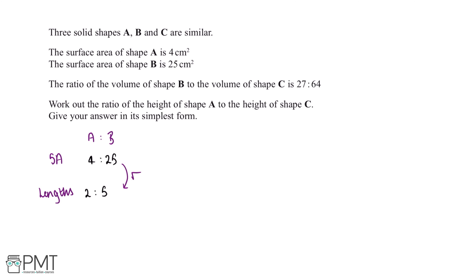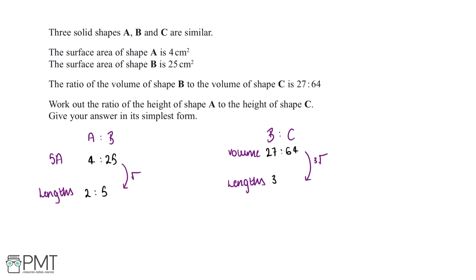The square root of 4 is 2 and the square root of 25 is 5. So if the height of shape A is 2cm, then the height of shape B will be 5cm. Now we can work out the ratio of lengths of shape B and shape C. The ratio of volumes of shape B and C is 27 to 64, and because we're working with volume, in order to work out the ratio of lengths, we're going to want to cube root these values.